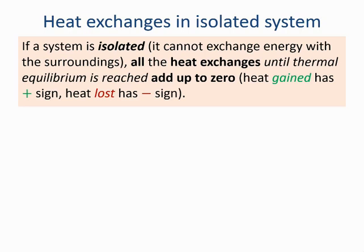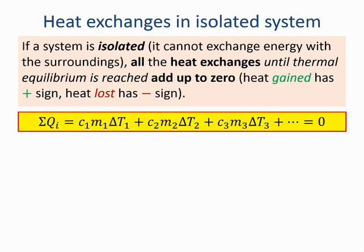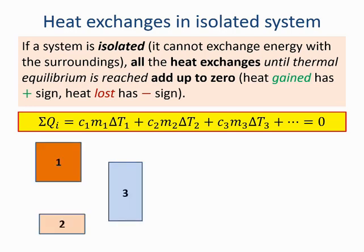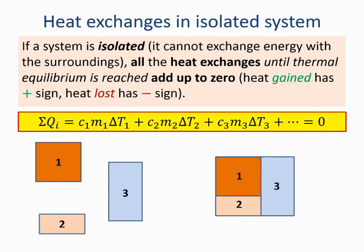Heat gained has a positive sign; heat lost has a negative sign. The sum of all heat exchanges — C₁M₁ΔT₁ plus C₂M₂ΔT₂ plus C₃M₃ΔT₃ and so on — must add up to zero. So if you have three initially separated objects, put them in thermal contact, and isolate the boundaries of the system so it doesn't exchange energy with the outside, the heat exchanges between objects 1, 2, and 3 must add up to zero — the system doesn't gain or lose energy overall. This is a generalization of the principle of conservation of energy.